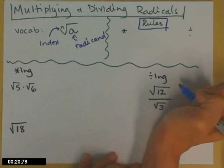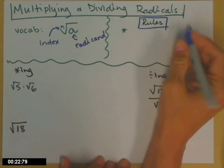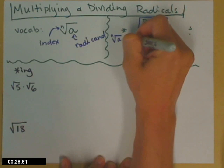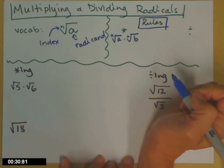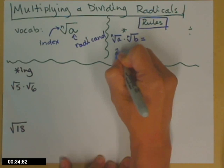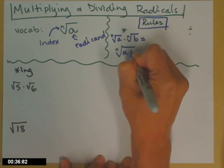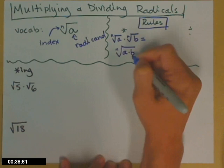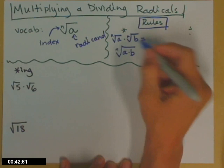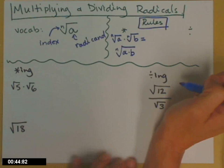And there are two rules, one for multiplying and one for dividing. If I have the nth root of a, and I multiply that times the nth root of b, where the indices are the same, I can rewrite that as the nth root of a times b, all under the same radical. And it's important, we can go this way, we can also go backwards, and we will be going both ways.